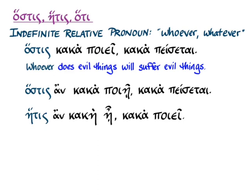Whoever does evil things will suffer evil things is the translation for both of these sentences. ἥτις ἂν κακὴ ᾖ κακὰ ποιεῖ. Whoever is evil does evil things. And you see again that ἄν and the subjunctive gives a generalizing force to the whoever clause along with a present indicative. So we have sort of a present general construction here. And both the ἥτις, the indefinite relative pronoun, and the subjunctive add to this generalizing force.